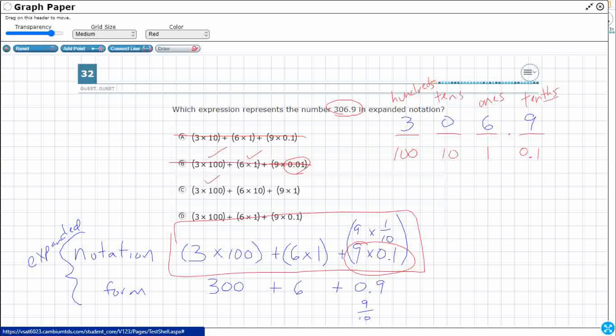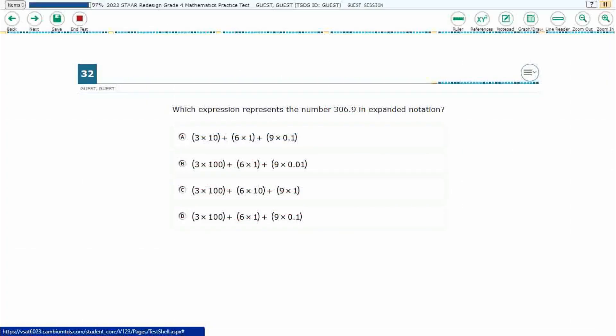3 times 100. Check. 6 times 10. No, the 6 is in the 1 spot. Let's hope it's D. 3 times 100. Yes. 6 times 1. Yes. 9 times 1-tenth. Yes. My answer is D.